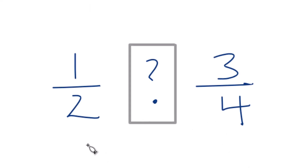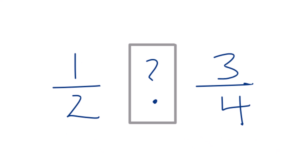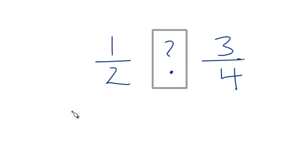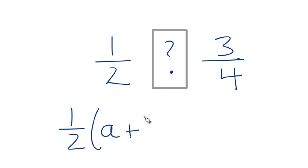Let's see if we can figure out what number is between one-half and three-fourths. There are probably a number of ways to do this, but this is the way I like to do it. I'm going to take the average of these two fractions, and that'll tell me which one is exactly between them. So we use the formula one-half times (a + b), where one-half is a and three-fourths is b.